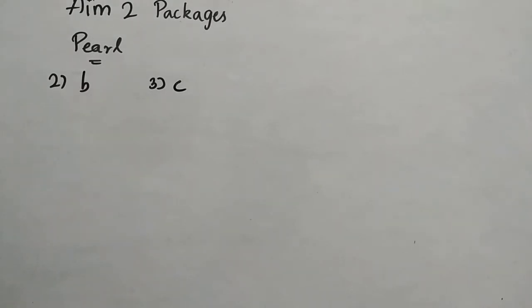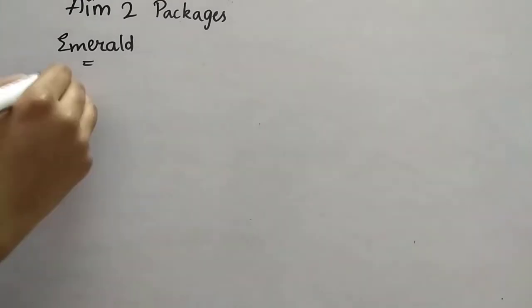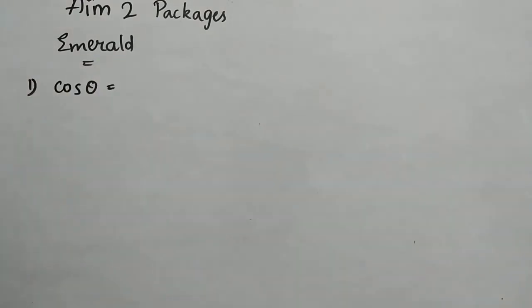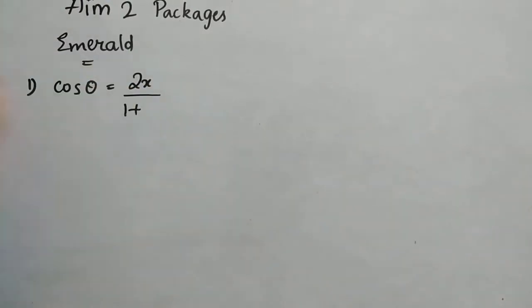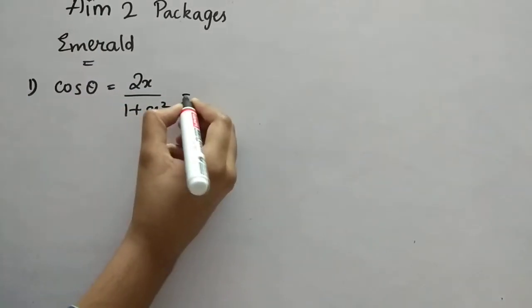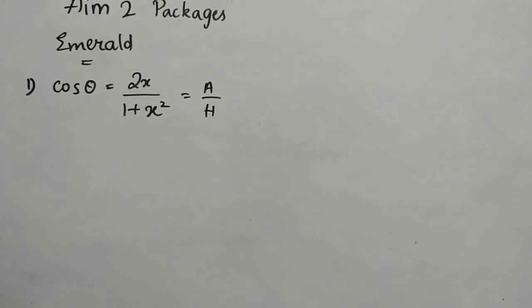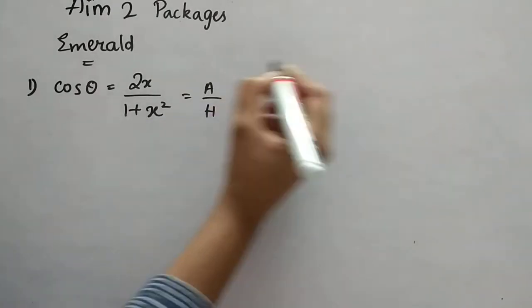Now we'll see the emerald package. First question: cos θ is given as 2x divided by (1 + x²). The cos θ formula is adjacent by hypotenuse. We have to find tan θ.